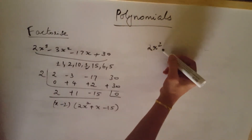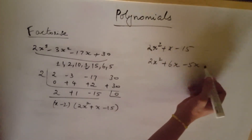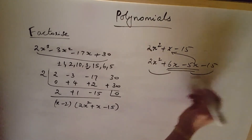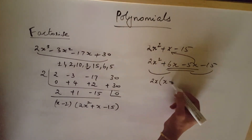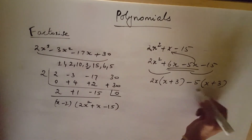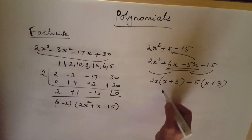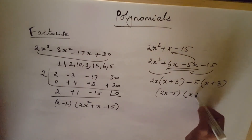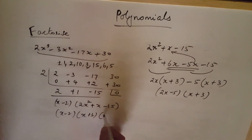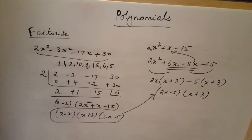Alternatively, to factor 2x squared plus x minus 15: split x as 6x minus 5x, giving 2x squared plus 6x minus 5x minus 15. Take 2x common from first pair: 2x times x plus 3. Take minus 5 common from second pair: minus 5 times x plus 3. So the answer is 2x minus 5 times x plus 3 — same answer as before. You can use whichever method is easier.